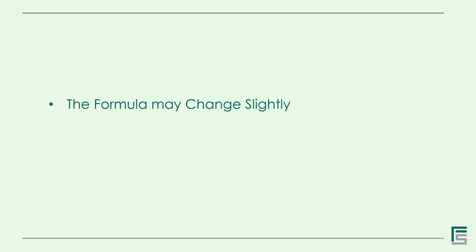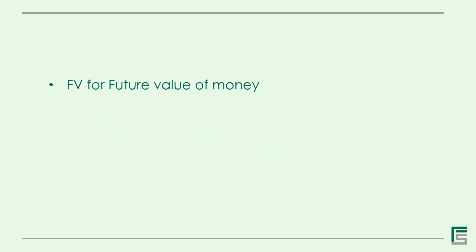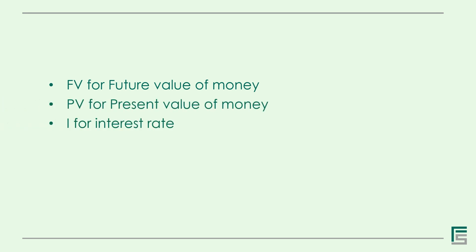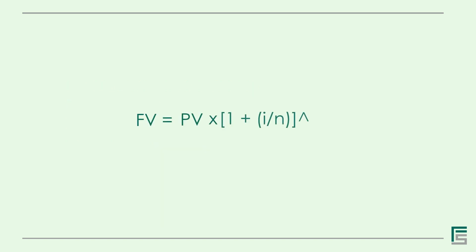Depending on the exact situation in question, the formula needed to calculate the time value of money can be changed slightly. But generally, the most fundamental and common formula considers the following variables: FV for future value of money, PV for present value of money, I for interest rate, N for number of compounding periods per year, and T for number of years. Based on these variables, the formula is: FV = PV multiplied by the quantity of 1 plus I divided by N, raised to the power of N times T.